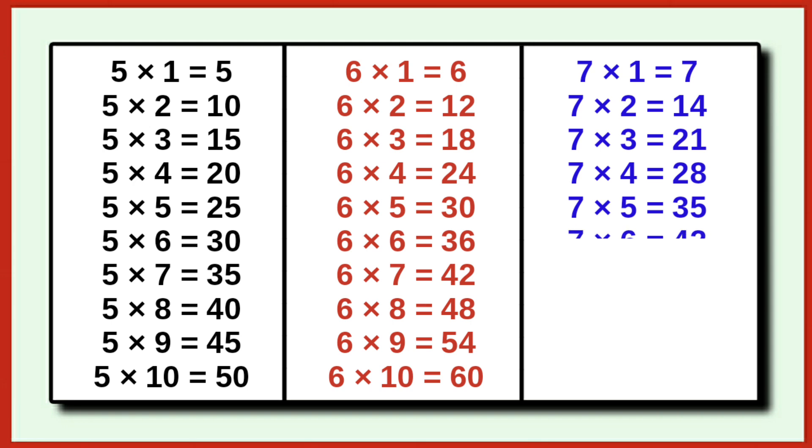7 times 6 is 42. 7 times 7 is 49. 7 times 8 is 56. 7 times 9 is 63. 7 times 10 is 70.